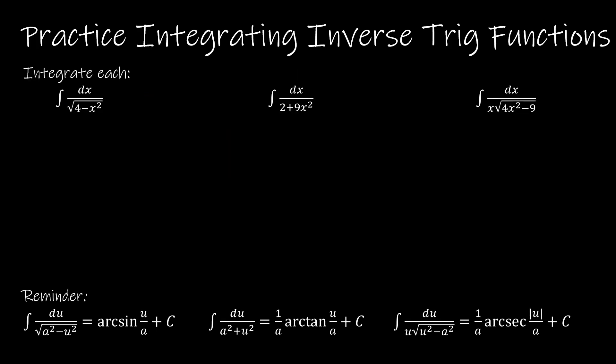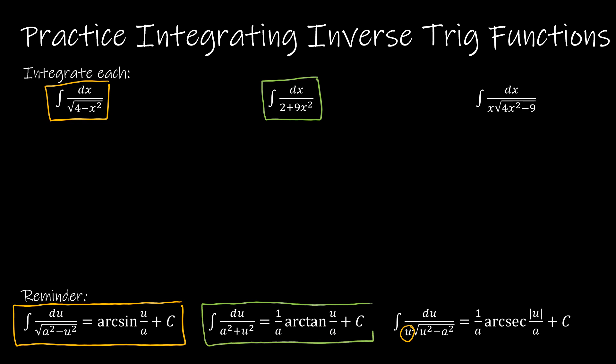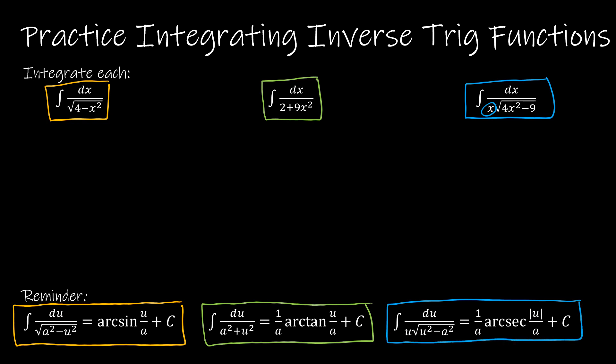We're going to take a look at the first three practice problems together, and I'm going to point out everything you need to be watching for. The first thing is to choose the correct inverse trig function. If you have a square root function with no extra function on the outside, it must be arc sine. For the middle function — the only one that doesn't have a square root — that has to be arc tangent. And for the last one, which has a square root but also an extra function on the outside, that has to be arc secant.